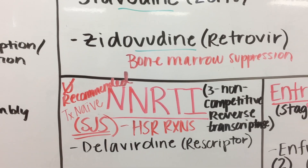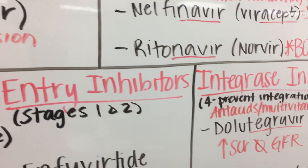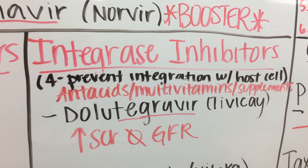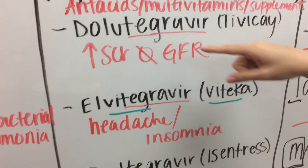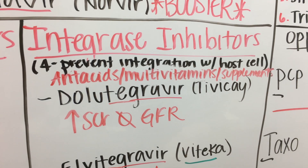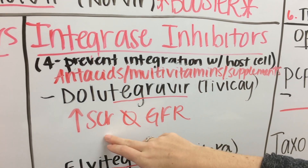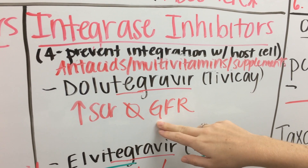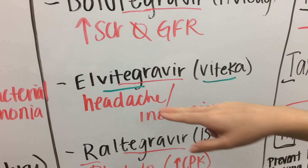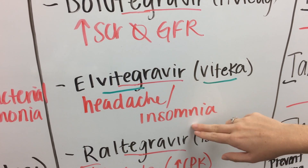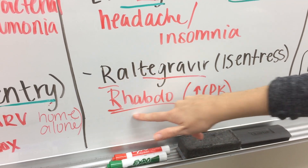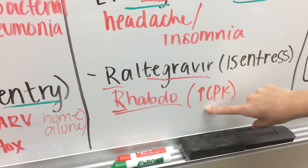Moving into our integrase inhibitors — these prevent integration within the host cell. All three main medications end in the stem '-tegravir.' Dolutegravir causes an increase in serum creatinine but does not affect GFR. Elvitegravir is known to cause headache and insomnia. Raltegravir — associating the R's together — is associated with rhabdomyolysis due to increased risk of elevated CPK.